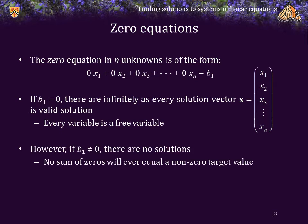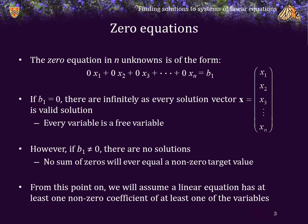On the other hand, if the target value is not 0, then there are no solutions, because no sum of zeros will ever equal a non-zero target value. From this point on, we are going to assume that when we have a linear equation, there will be at least one non-zero coefficient of at least one of the variables. The only place where we will end up with a zero equation is when we start manipulating a system of linear equations to find a solution, if one exists.